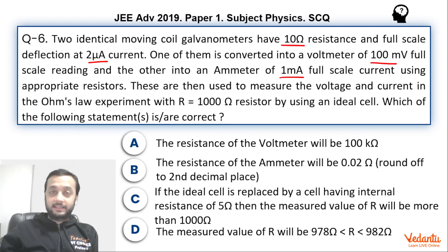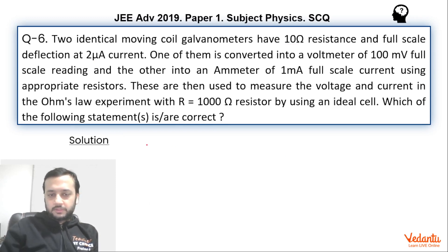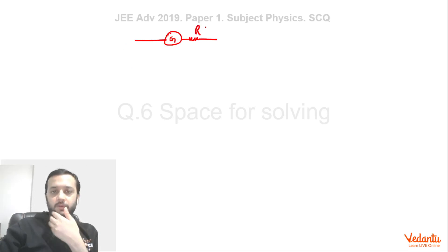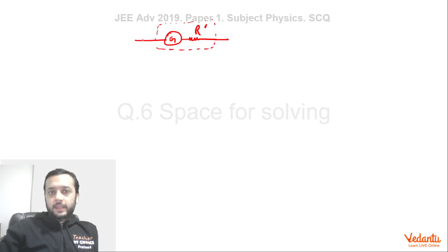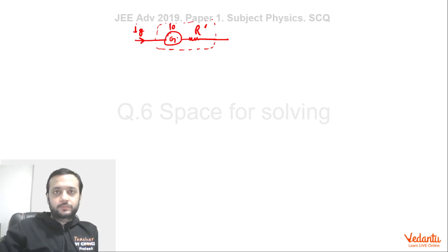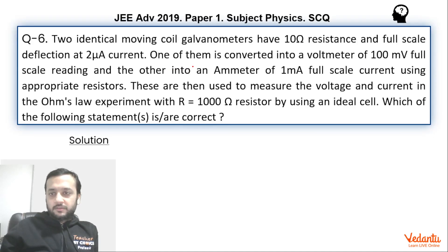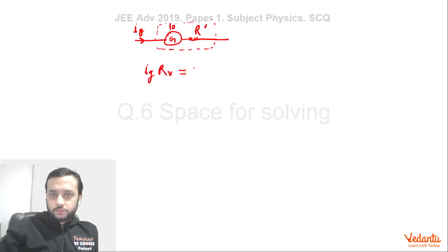First, let's find the resistance of the voltmeter, as asked in option A. To create a voltmeter, we attach a very high resistance to a galvanometer — this whole combination is called the voltmeter. The maximum scale deflection current IG is passed through it. The total resistance RV equals 10 plus r-dash, and IG times RV equals the voltmeter reading of 100 millivolts.